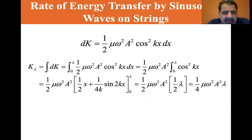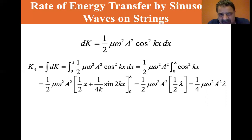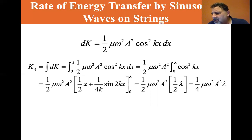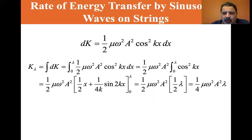K_λ equals the integral from zero to λ of one-half μ ω² A² cos²(kx) dx. Since one-half, μ, ω², and A² are all constants, they come out of the integral. From an integral table, the integral of cos²(ax) dx equals x/2 plus sin(2ax)/(4a). In our case a equals k, so the integral of cos²(kx) dx equals x/2 plus sin(2kx)/(4k).